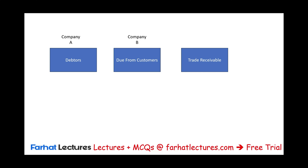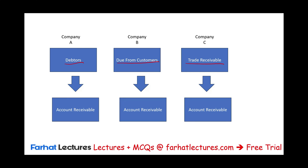Drilling a little further — think about Company A, Company B, and Company C. Company A calls their accounts receivable 'debtors,' Company B calls it 'due from customers,' and Company C calls it 'trade receivable.' But when you transmit this information, you want to call it 'accounts receivable.' So you take all these naming conventions and turn them into a standardized name — accounts receivable. So when Company A, B, and C each submit to the SEC, it's all labeled 'accounts receivable.' It's a common language.